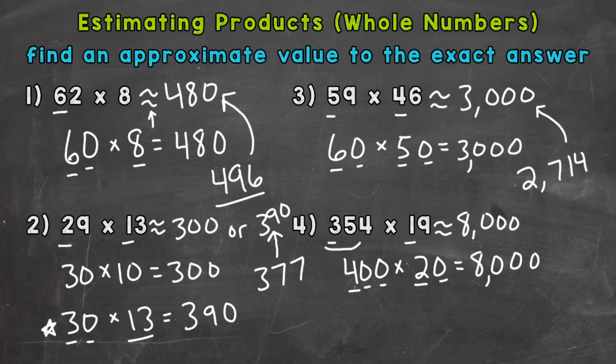Now another strategy we can do, we see that 354, that's close to 350, way closer to 350 than 400. So remember, the closer you round to that original problem, the better your estimate is going to be. And I'm thinking ahead here a little bit, because I know 19 is close to 20. And I know what two times 35 is. So two times 35 is 70.